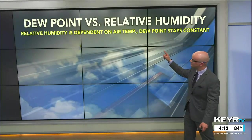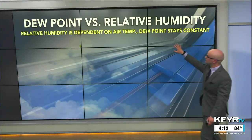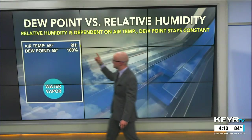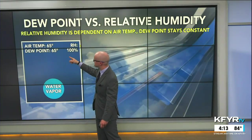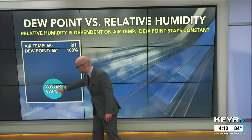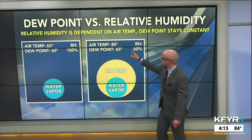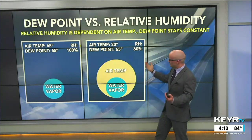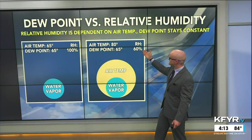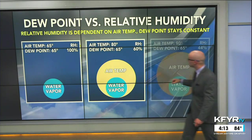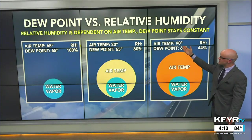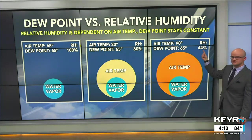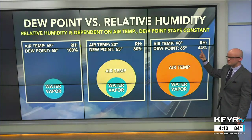Relative humidity is dependent on air temperature, whereas dew point usually stays constant. For example: air temperature 65 degrees, dew point 65 degrees — relative humidity is 100%, saturation. Air temperature 80 degrees, dew point still 65 degrees — we have a warmer day and relative humidity drops to 60%. Air temperature 90 degrees with summer-like weather, dew point stays the same at 65 degrees — relative humidity is all the way down to 44 percent.